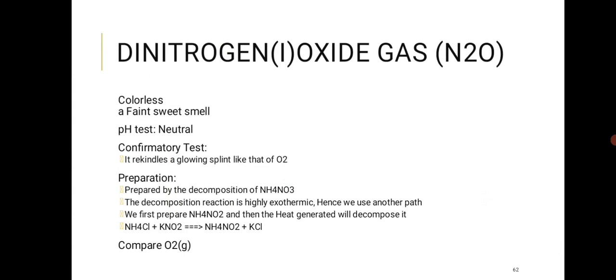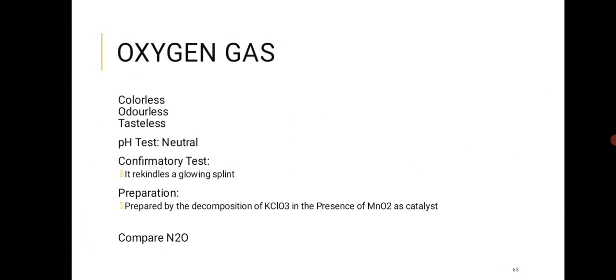Nitrous oxide (N2O), or laughing gas, is colorless with a faint sweet smell — breathing it causes laughter. It is used in anesthesia to prevent patients from feeling pain. Confirmatory test: it relights a glowing splint, just like oxygen. Preparation: by the decomposition of ammonium nitrate (NH4NO3) — not KNO2, and it is NH4NO3, not NH4(energy).